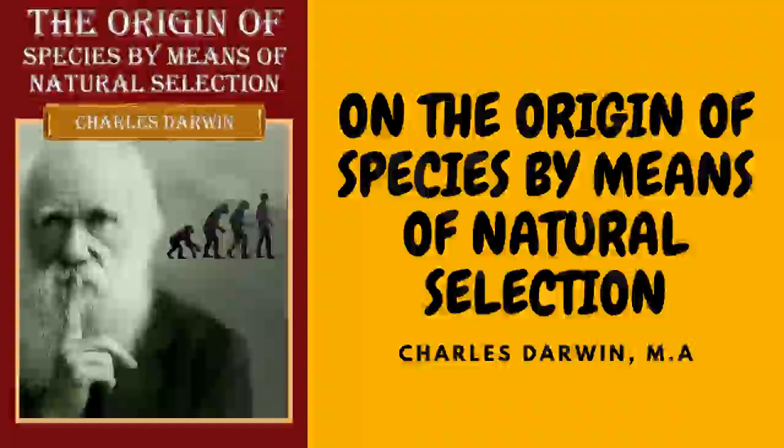When on the one hand we see domesticated animals and plants, though often weak and sickly, yet breeding quite freely under confinement; and when on the other hand we see individuals, though taken young from a state of nature, perfectly tamed, long-lived, and healthy, yet having their reproductive system so seriously affected by unperceived causes as to fail in acting — we need not be surprised at this system, when it does act under confinement, acting not quite regularly and producing offspring not perfectly like their parents, or variable. Sterility has been said to be the bane of horticulture; but on this view we owe variability to the same cause which produces sterility, and variability is the source of all the choicest productions of the garden.